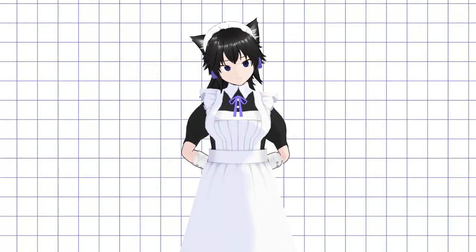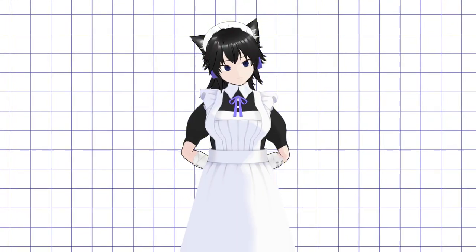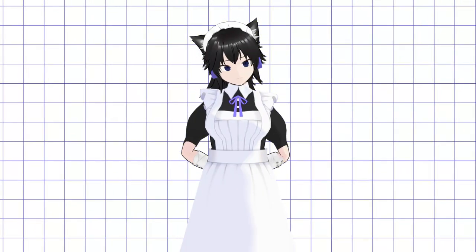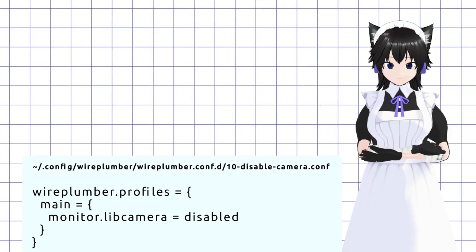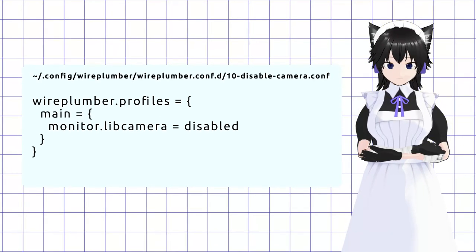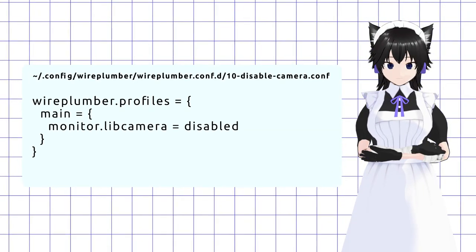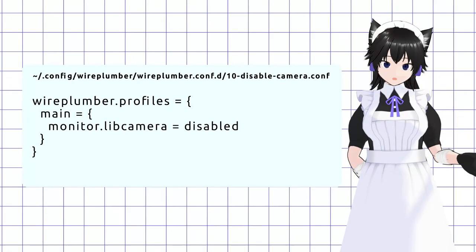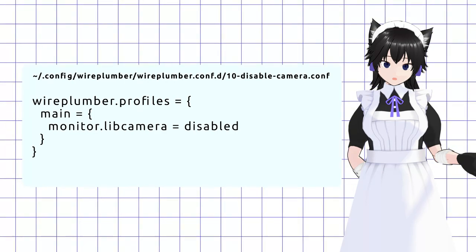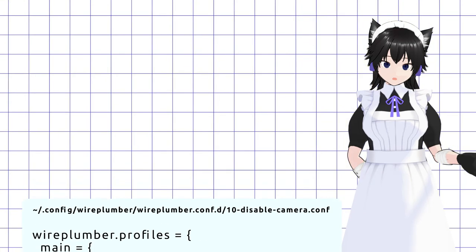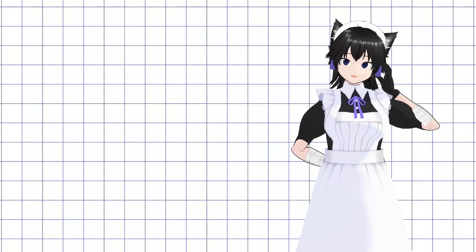Now, if you know you're affected, you can temporarily mitigate the issue by adding a specific config file in the Wireplumber config folder. You can copy the file path and text from my blog or from the description. After that, you should restart the Wireplumber service.